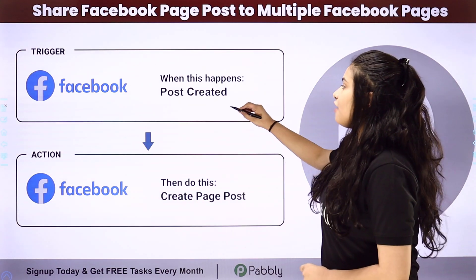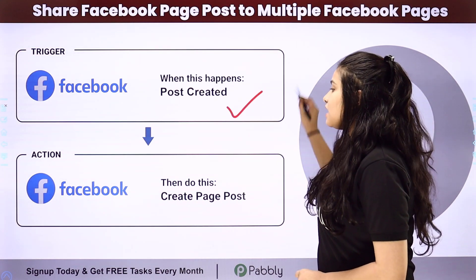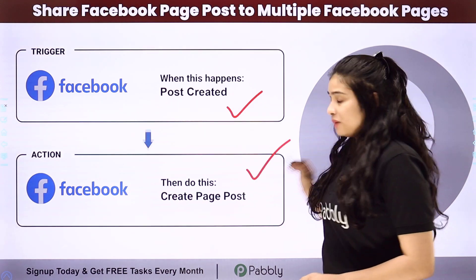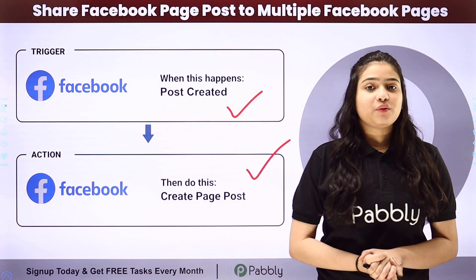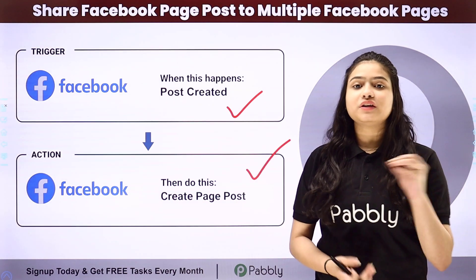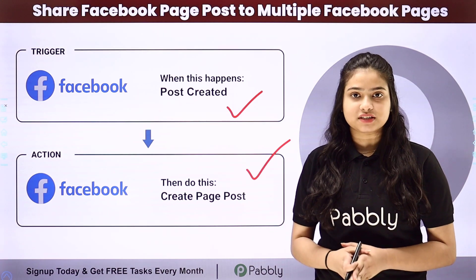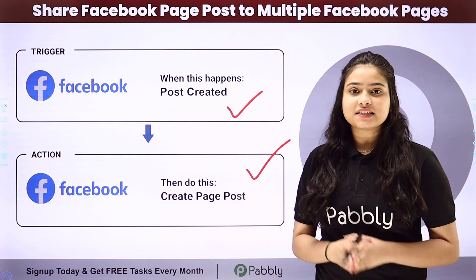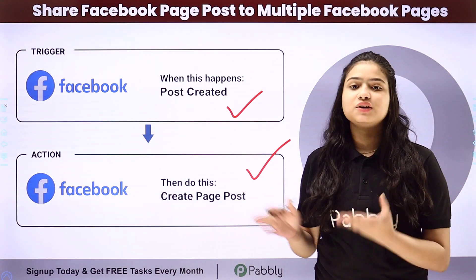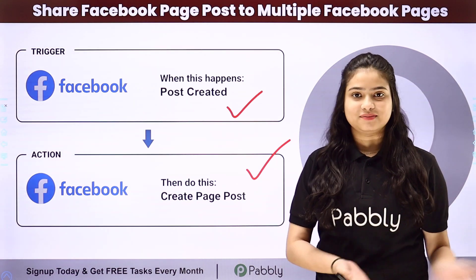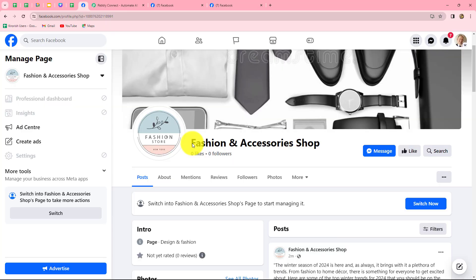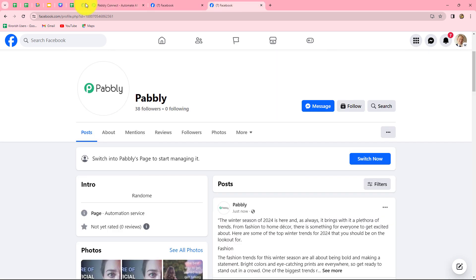In our trigger we have Facebook pages and in our action again we have Facebook pages. We are going to connect both of them using Pabbly Connect in order to automate this entire process. In this video we are going to learn how to automatically share our Facebook page posts on multiple Facebook pages.